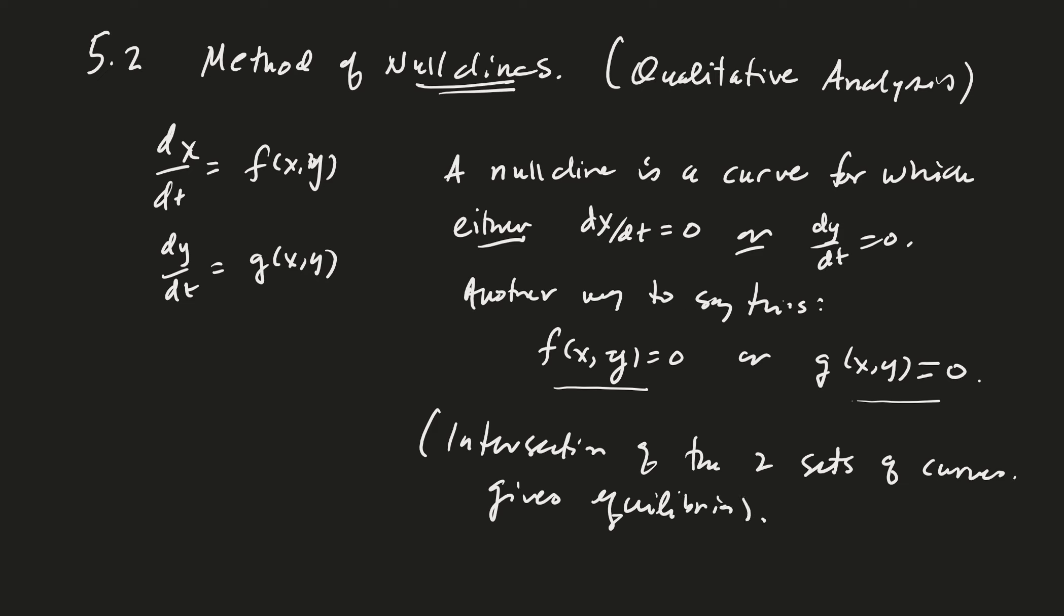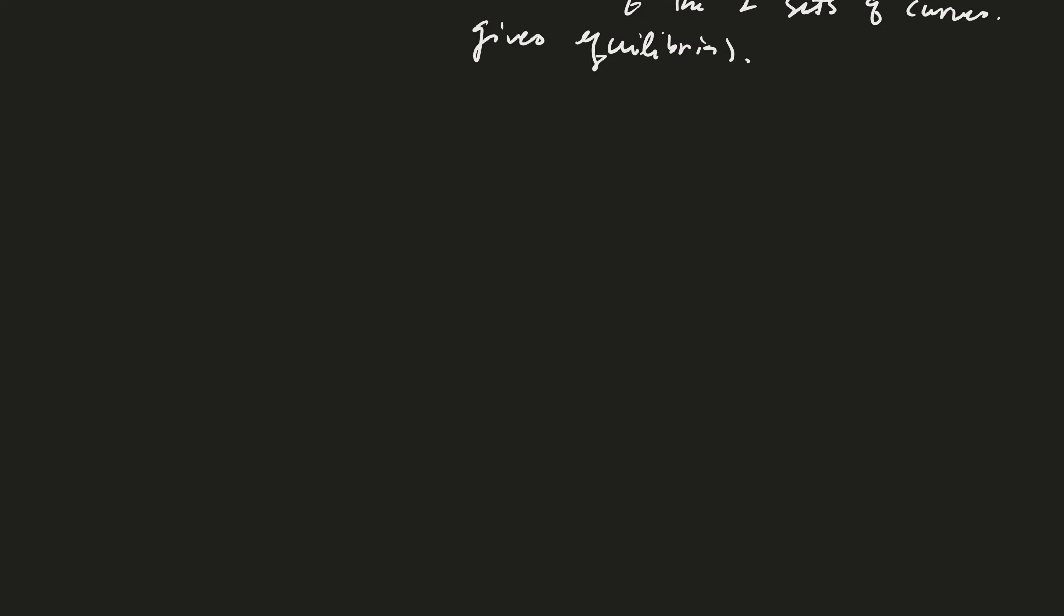And so you might also notice if one of these is equal to 0 but the other one's not, then that means you're traveling either straight up and down or straight side to side. So we're going to use that information. I think we can just jump right to an example. Let's take a look at x prime equals 2x minus x squared minus xy, and y prime is equal to 3y minus y squared minus 2xy.